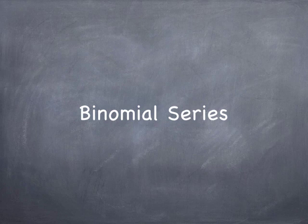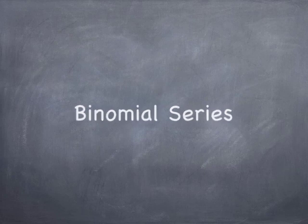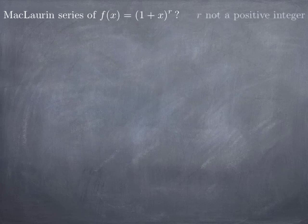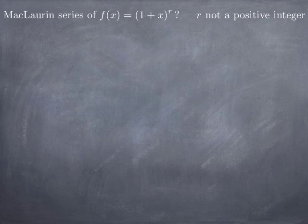Finally, to complete our toolbox for finding power series representations of functions, we're going to look at the power series representation for a particular class of functions. These are the so-called binomial series. Namely, we're looking for power series representations for functions of the form (1 + x)^r, where r is a real number. We're going to assume that r is not a positive integer, because otherwise we have just a polynomial of degree r, its Maclaurin series is finite, and writing it out is simply writing the polynomial in standard form. So that's not very interesting, and we're going to throw out this case.